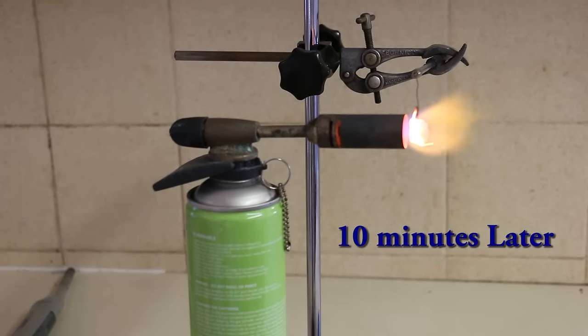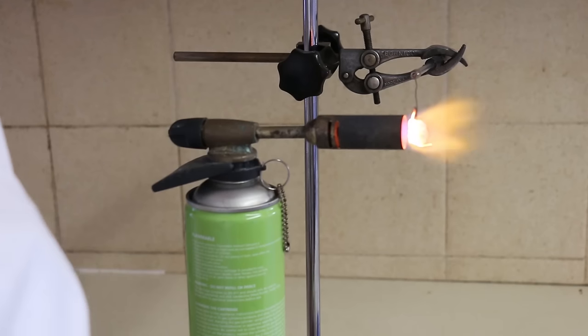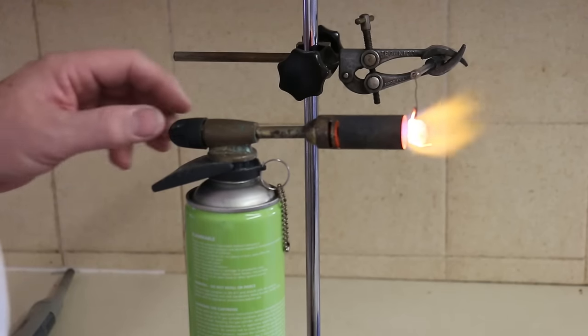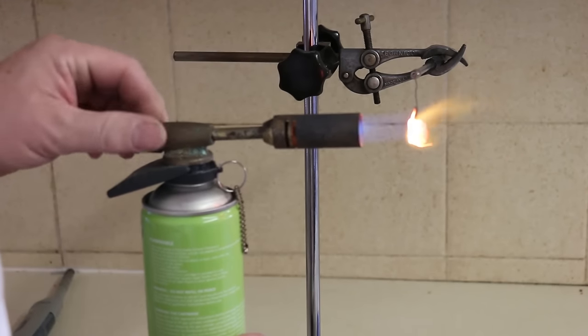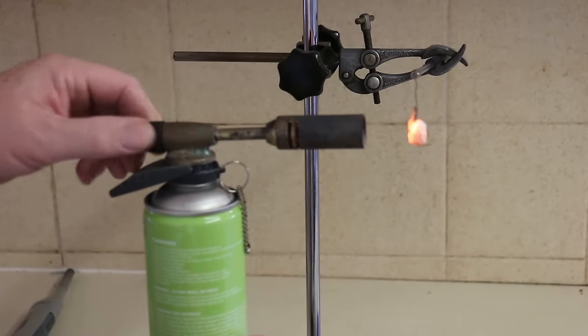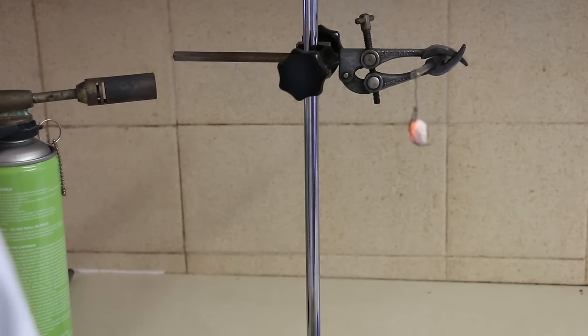Now that the rock has gone completely white and it's glowing red hot from within, we can now turn off the flame and allow the piece of calcium oxide to cool. And then what we'll do is weigh it again so we can compare it with its former weight.